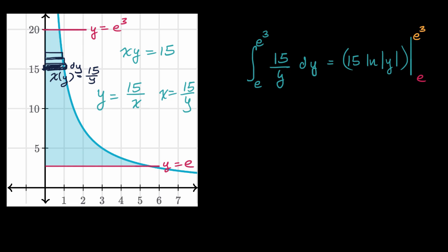Let's first evaluate it at e³. So that's 15 times the natural log of the absolute value of e³ minus 15 times the natural log of the absolute value of e.